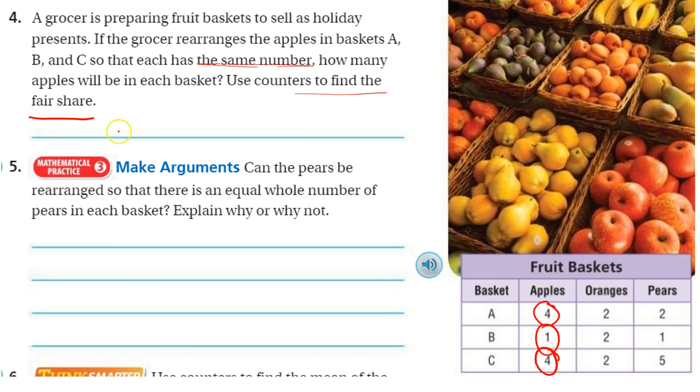So we're using this data here. So we have four counters, one counter in basket B, and four counters in basket C. So if I take one away from this and put it here, take one away from this, which is now the tallest, and put it here, now they each have three. So three is the fair share. Three apples.